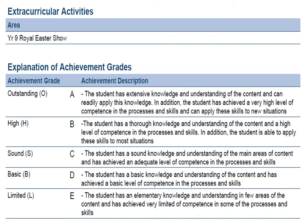The table below the extracurricular list simply explains to you what each achievement grade means. For example, if we look at the outstanding grade, which is represented by an O, this means that the student has achieved an A grade on the A to E scale.